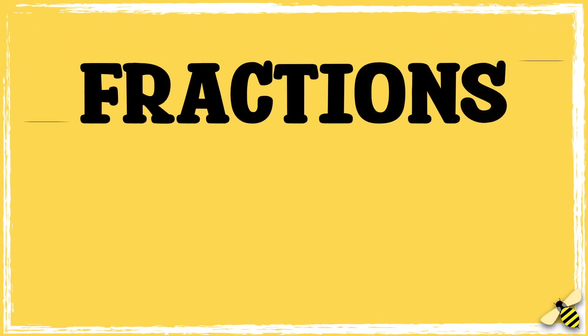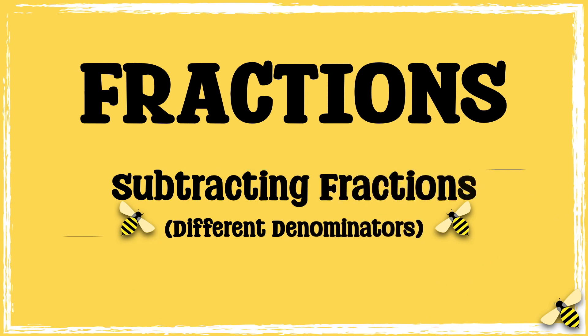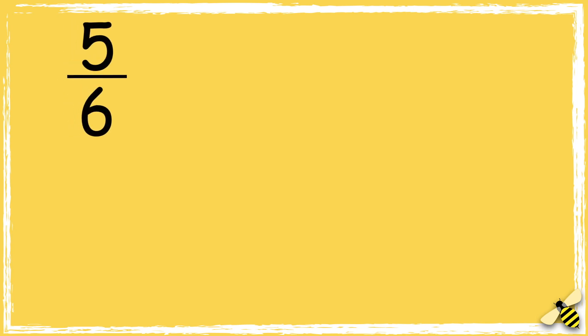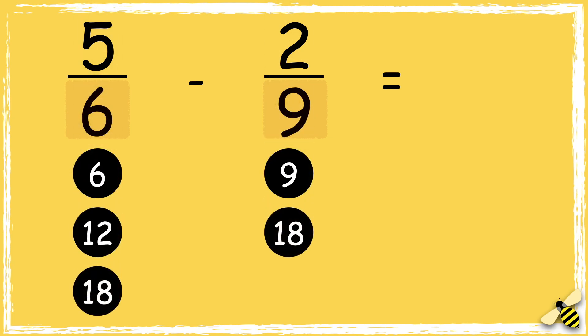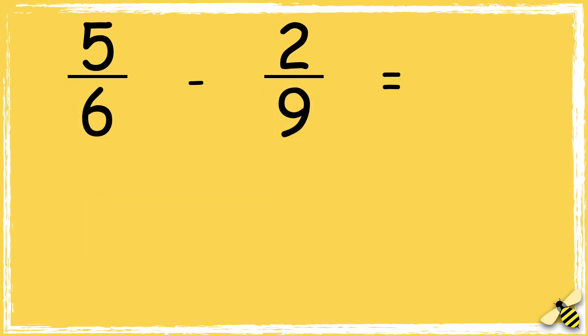In this video we're going to look at how to subtract fractions with different denominators. Here is a calculation: 5/6 take away 2/9. The denominators must be the same for us to be able to subtract the fractions, so the first thing we need to do is find a common denominator. We need to find the lowest common multiple of the denominators, so let's look at the multiples of 6 and 9. 18 is the lowest common multiple, so I can make both of the denominators 18.